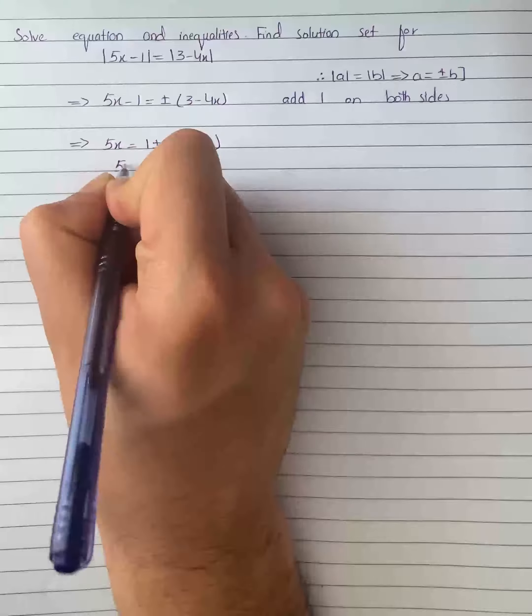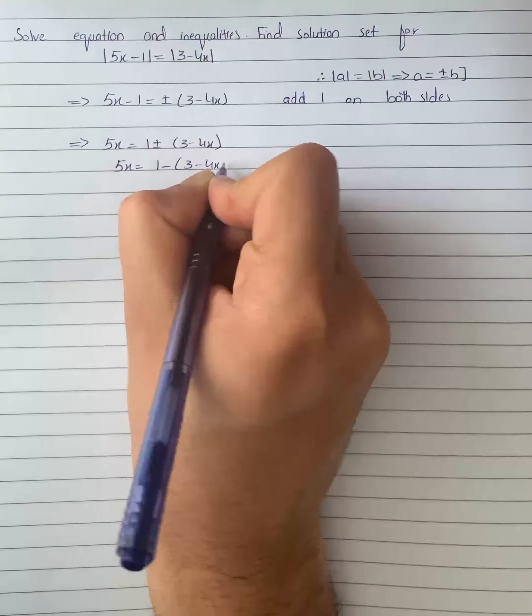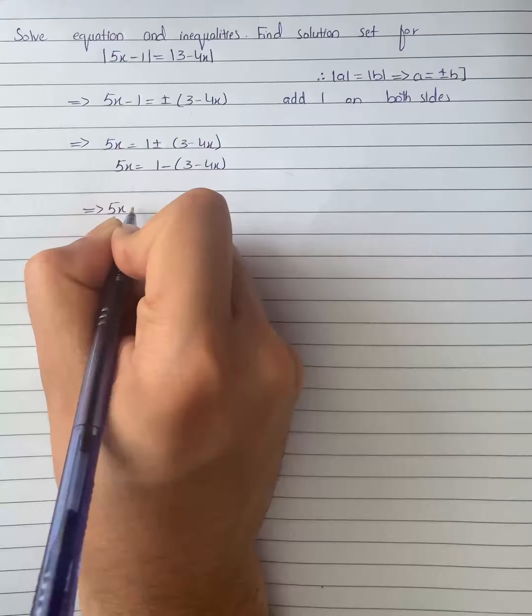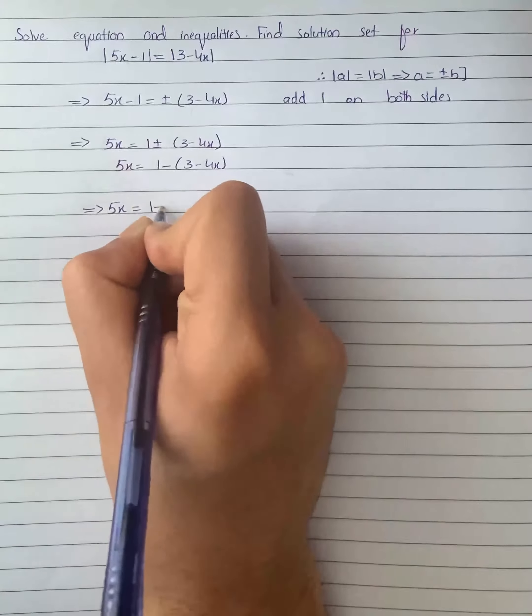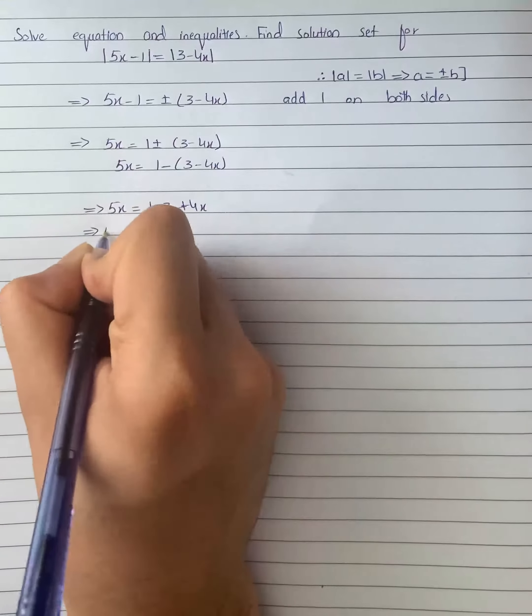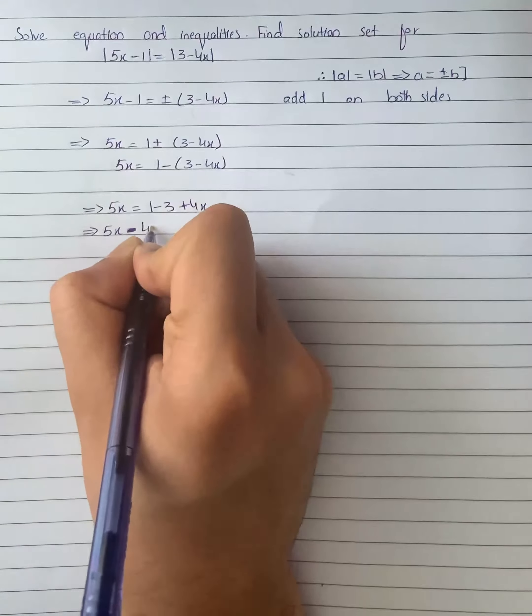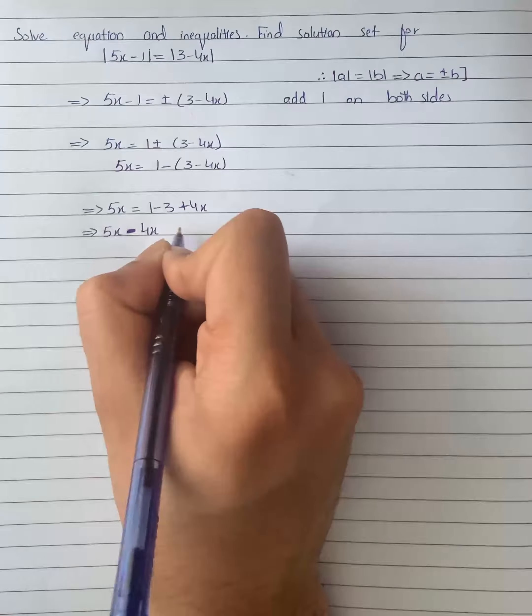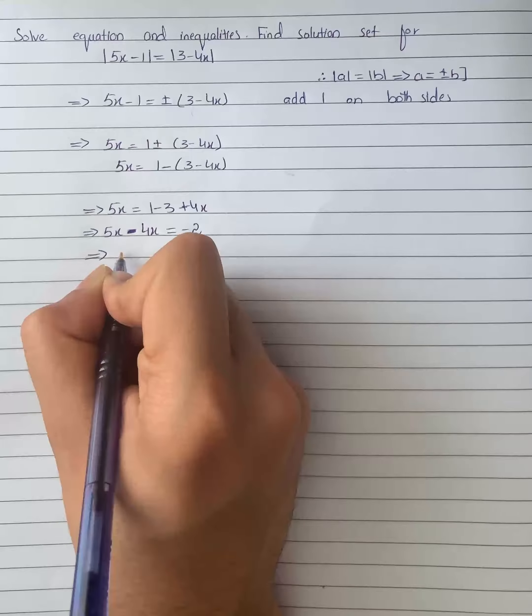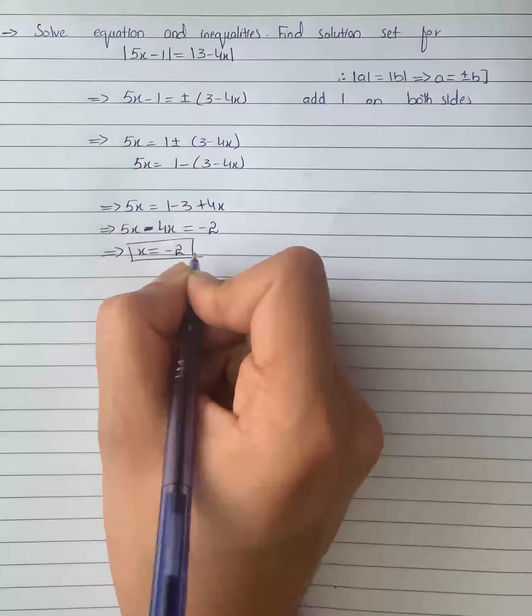Let's take the first possibility, that is 5x = 1 - 3 + 4x. So it becomes 5x = -2 + 4x. Further on it gives us 5x - 4x = -2. Now it becomes x = -2. This is for the first possibility.